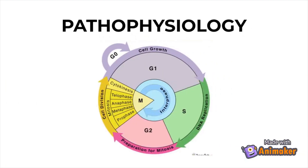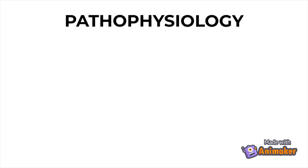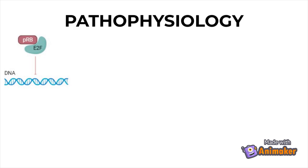Now let's take a look at the mechanism by which this disorder occurs. The cell cycle is a series of events that takes place in a cell to allow it to divide. The cell cycle consists of five phases: a G0 phase, a G1 phase, a G2 phase, an S phase, and an M phase. During the G1 phase, the retinoblastoma protein, commonly abbreviated as PRB, is bound to E2F, a transcription factor — a protein that helps to regulate DNA transcription. The binding of PRB to E2F prevents E2F from binding to DNA and transcribing genes, which would otherwise create proteins necessary for DNA replication.